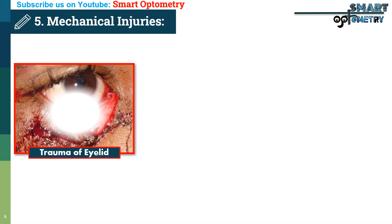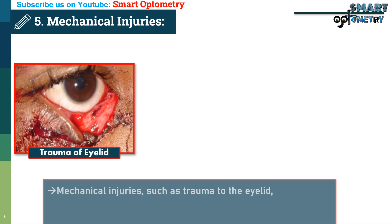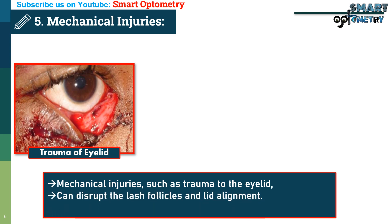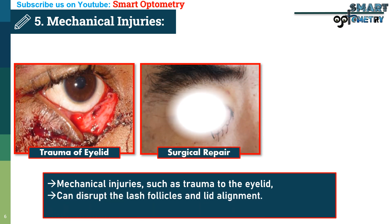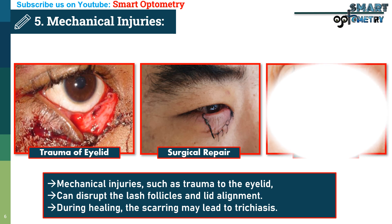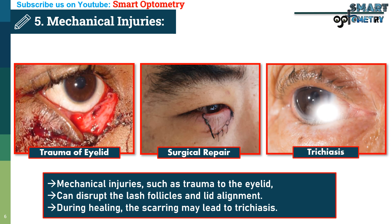5. Mechanical injuries. Mechanical injuries, such as trauma to the eyelid, can disrupt the lash follicles and lid alignment. During healing, the scarring may lead to inward lash growth, or trichiasis.